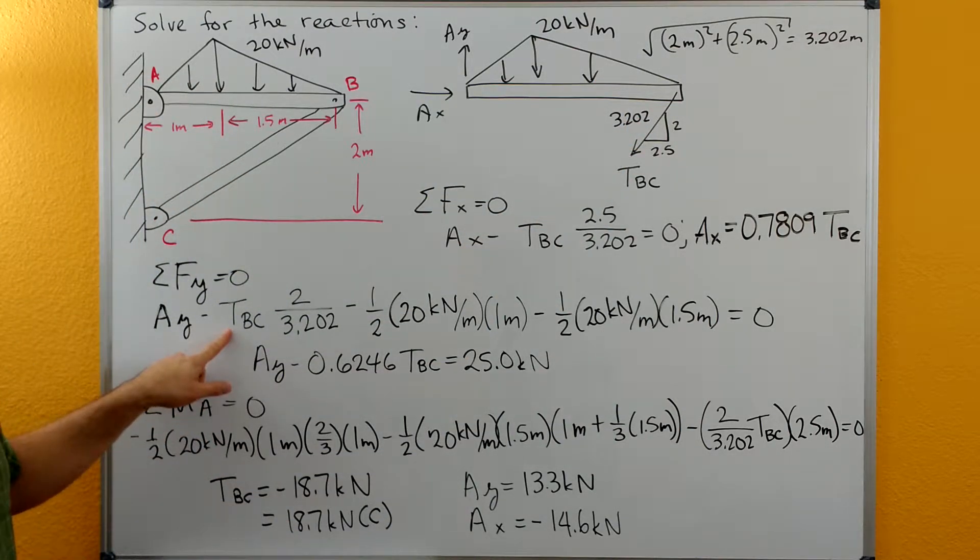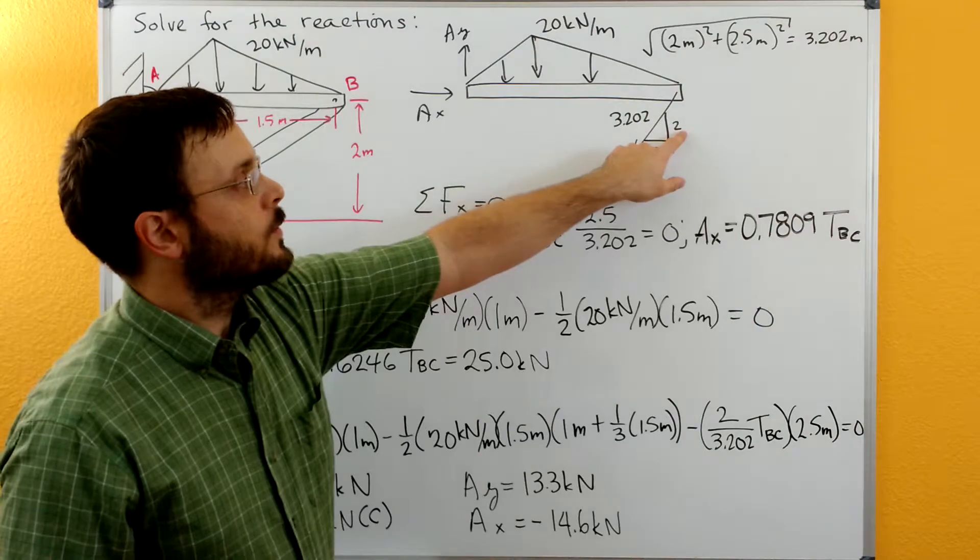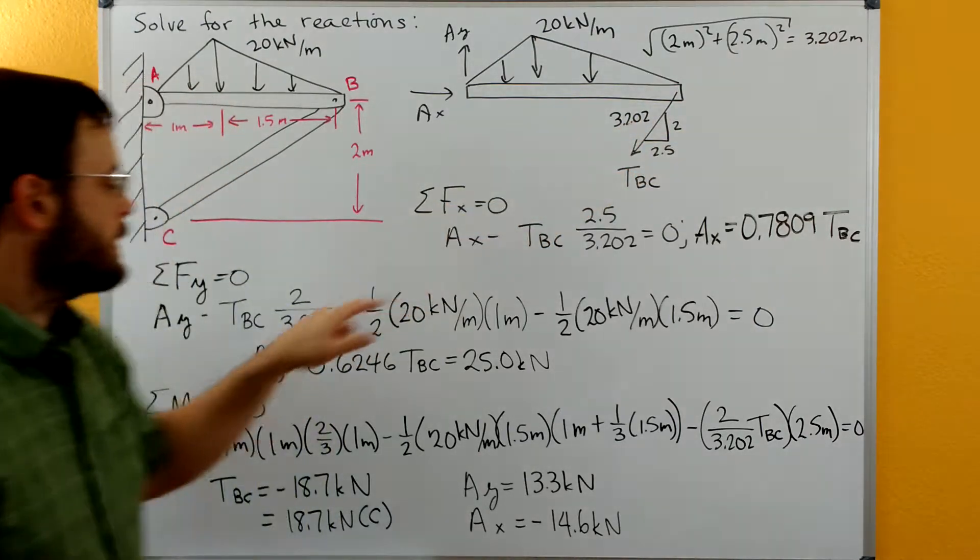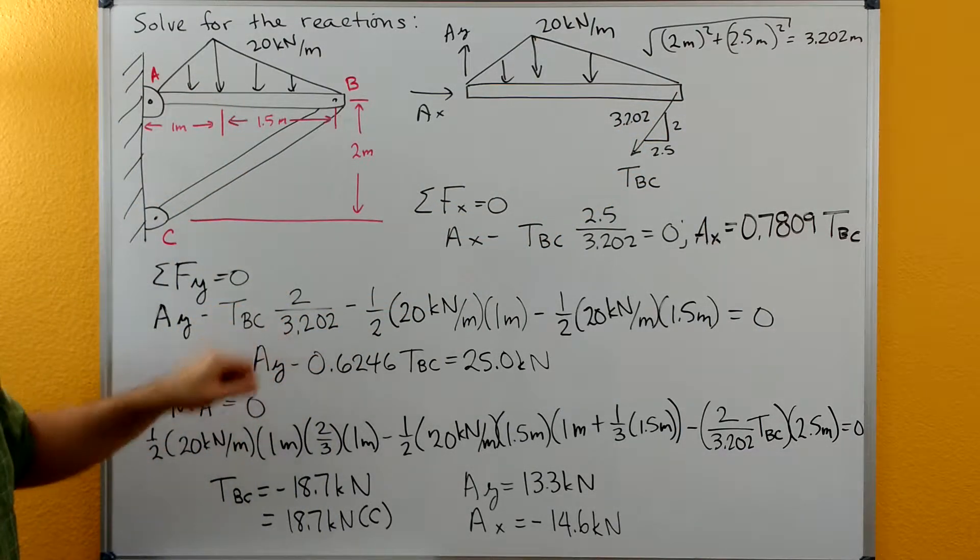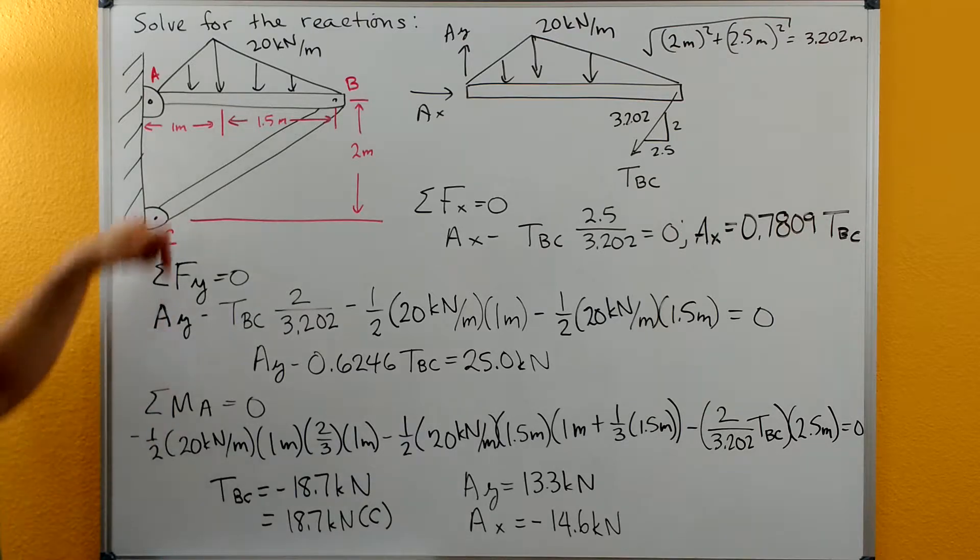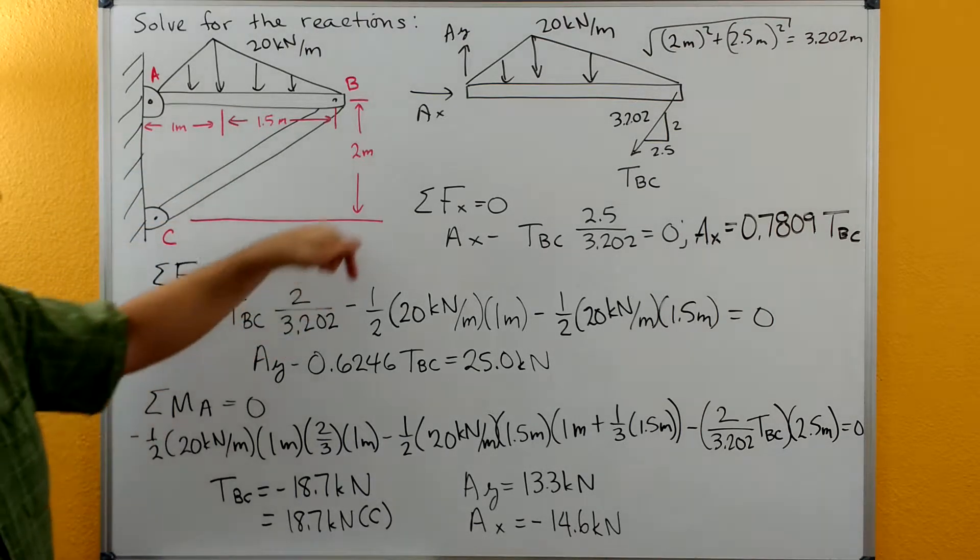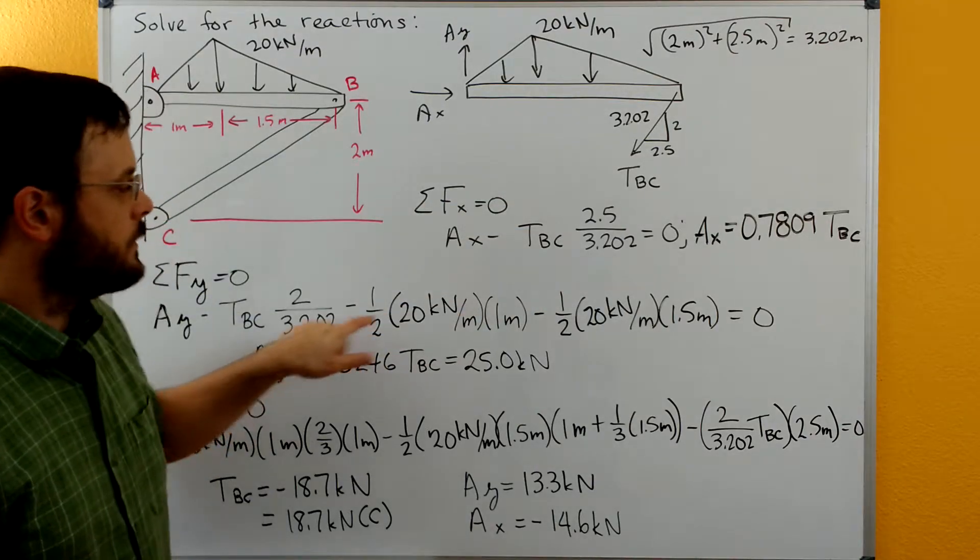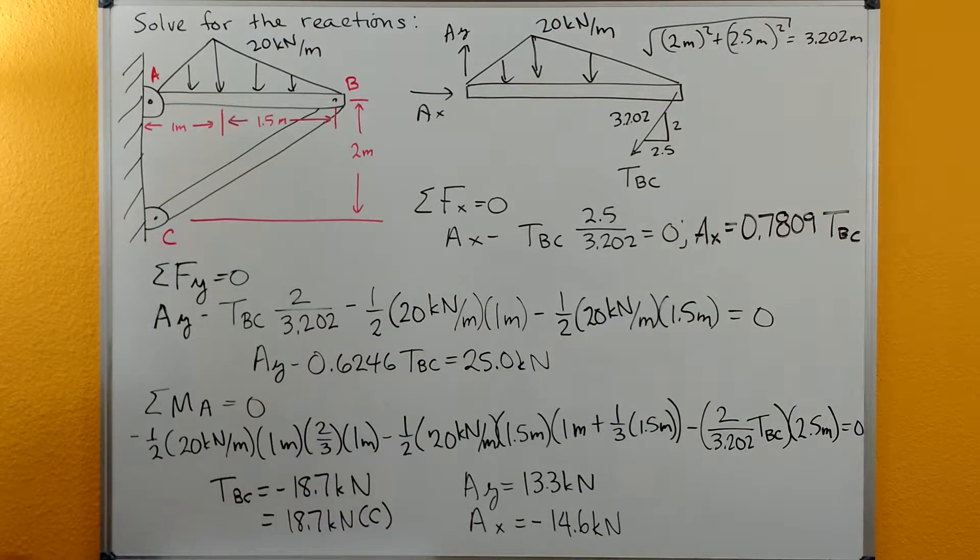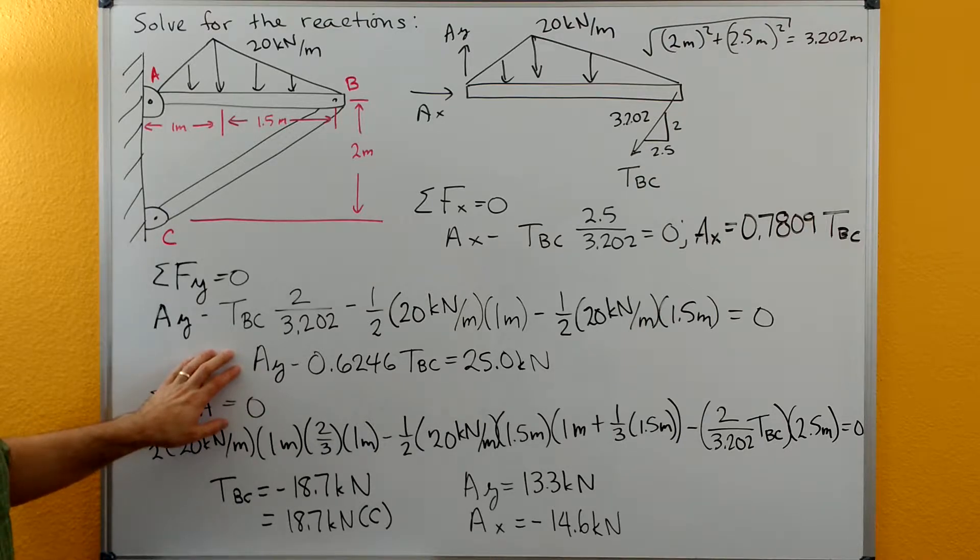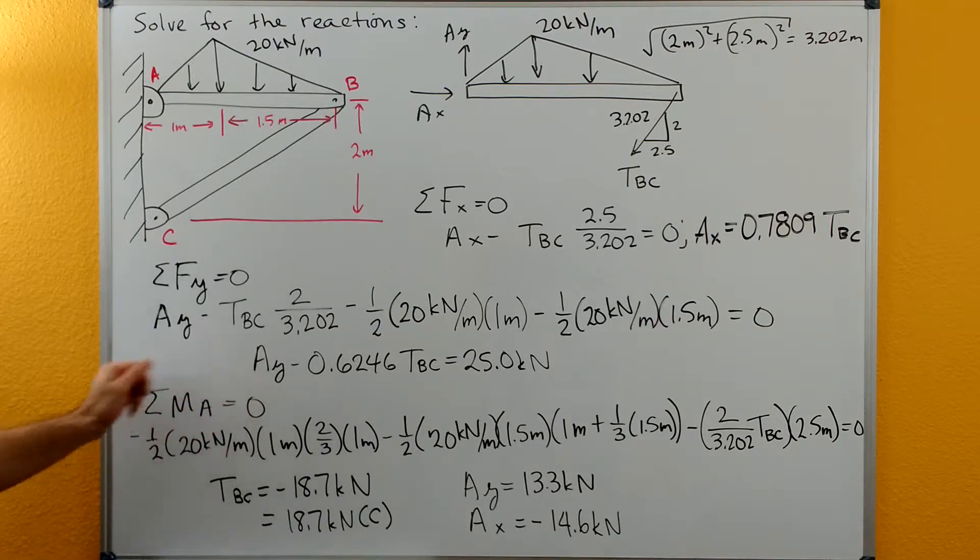And then we have minus TBC times the Y side here divided by the hypotenuse. So the 2 divided by the 3.202. TBC Y component is negative so we have a negative sign here. Distributed load is negative so we have the two negative signs there. We get this equation after some simplification but we still can't solve it yet because we have two unknowns and then we need to do sum of the moments.